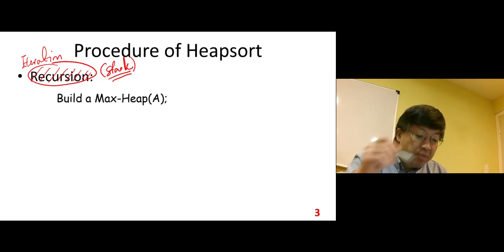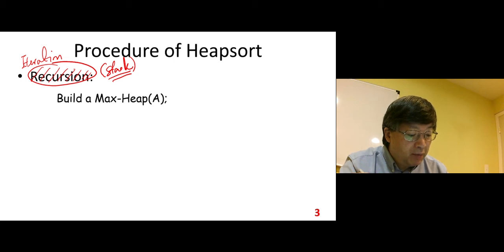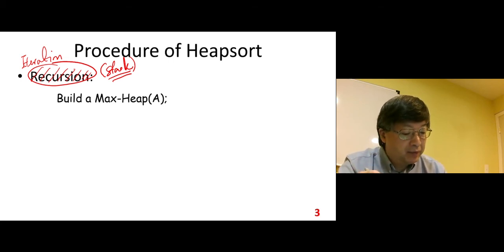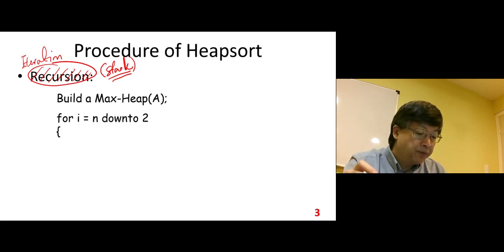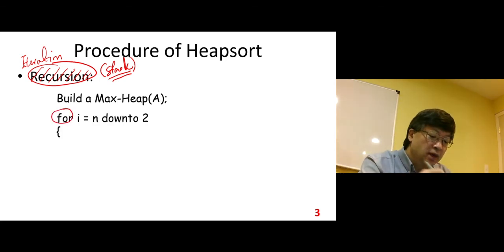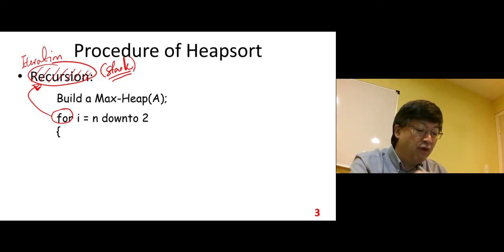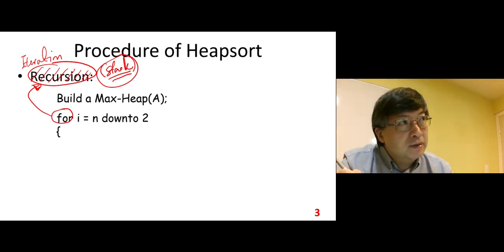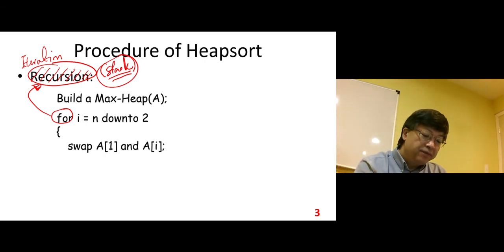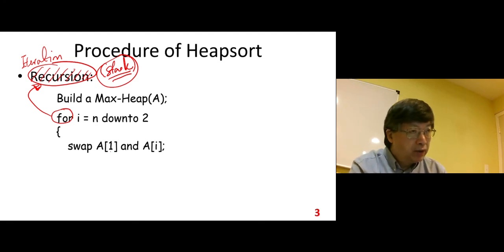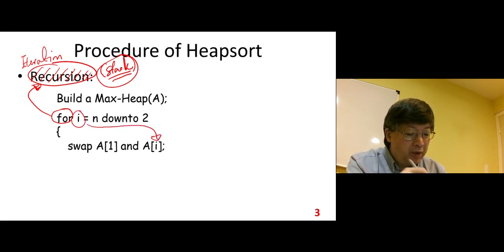Build a heap at the beginning — but we only do this one time. This building step we do only once. After that, there is a for loop. In each iteration, we do a swap operation first — swap the root element with i, the last element in the current heap.